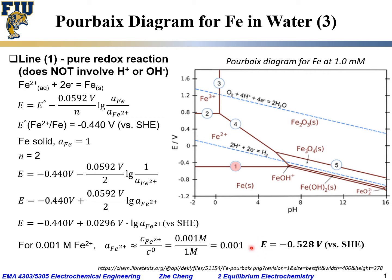With this value substituted in, the electrode potential for this redox pair at this concentration would be −0.528 volt versus SHE. This is the position of this horizontal Line 1 that separates Fe²⁺ from solid iron metal. Of course, if the concentration is not 1 millimolar, the line would move up or down depending on the concentration.